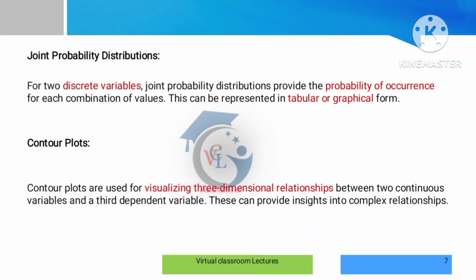Next is joint probability distribution, which deals with discrete variables. It shows the probability of occurrence — the chances of something happening — presented in tabular or graphical format. Then contour plots, which we have already seen in previous units, are used for visualizing three-dimensional relationships with continuous variables.